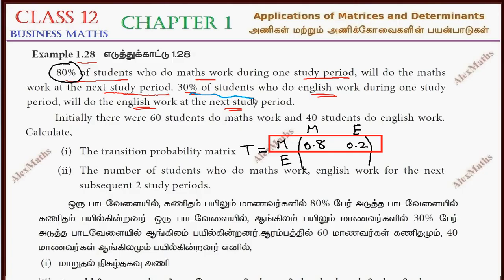30% of the students who do English work during one study period will continue English work. So English work is 30%, which is 0.3, and the balance is 0.7. This completes the transition probability matrix.